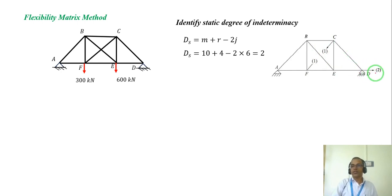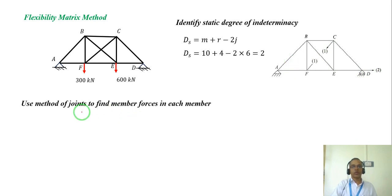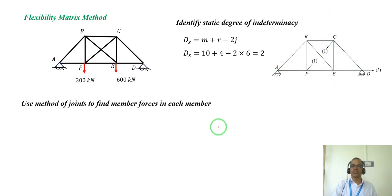The removed member becomes one of the coordinates, meaning this will have a unit force in that member. Coordinate 2 will have another unit force. Using the method of joints, we can find the member forces for each of the members for each case separately.